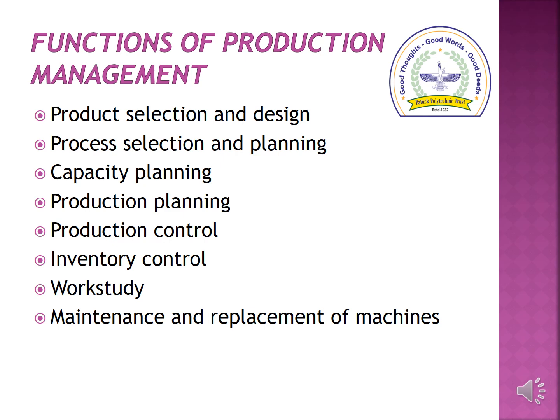Now let us discuss the functions of production management. The first is product selection and design — the production department must take care of production design in a way that meets customer requirements. Next is process selection and planning, which involves decisions relating to choice of technology, equipment, machines, material handling systems, mechanization, and optimization. Next is capacity building, where the production manager plans for the right production capacity. Then production planning involves routing and scheduling, and production control involves monitoring production against targets.